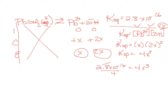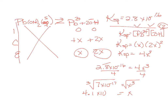Go ahead and simplify — start by dividing both sides by 4. We get 7 times 10 to the minus 17 equals X cubed. Take the cube root of both sides and we get that our answer is 4.1 times 10 to the minus 6. Solubility is X — that tells us the concentration of lead hydroxide that actually dissolves.